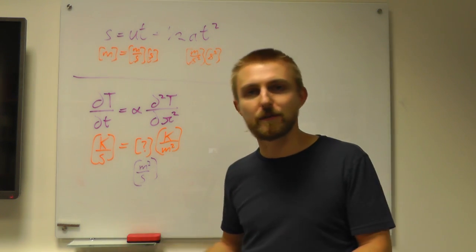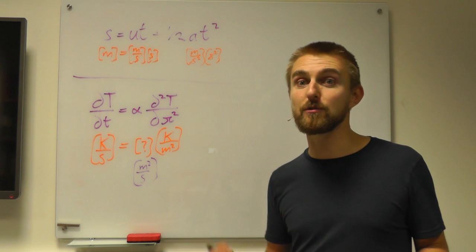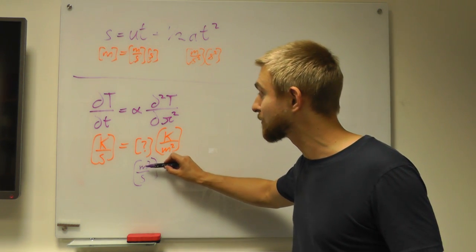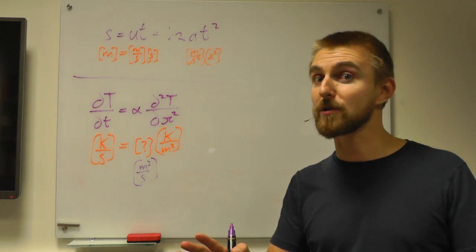So now when you go off and Google a result that someone's asked you to look for, if the units are not some kind of length squared divided by some kind of time, then you know it's not the thing you're looking for.